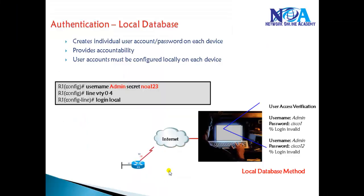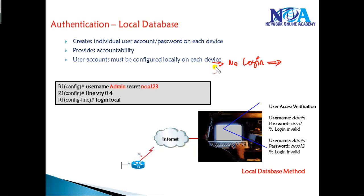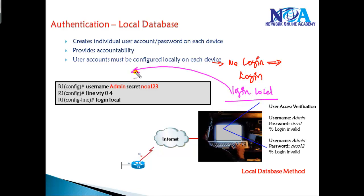These are the different options available. The 'no login' option is recommended more in lab scenarios but is strictly not recommended for production networks — it allows login via console or any specific line without asking for passwords. The 'login' option prompts for the password configured under that particular line. The 'login local' option prompts for the local username and password created on that device.